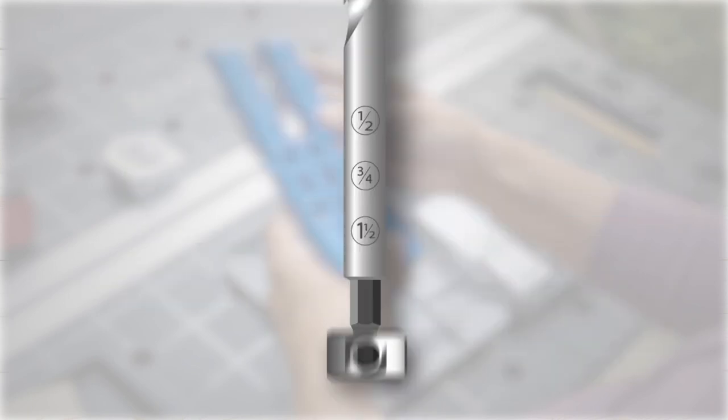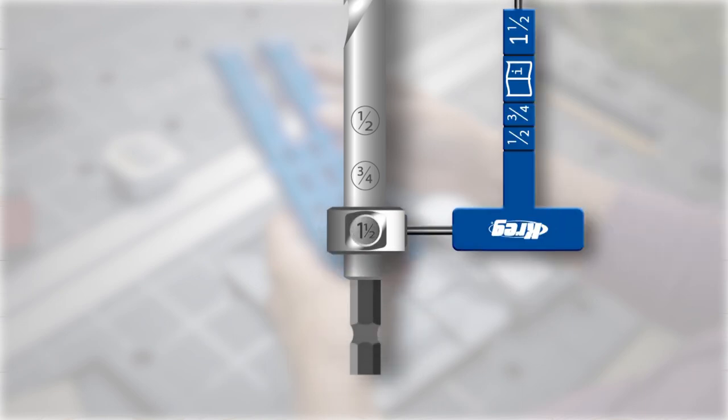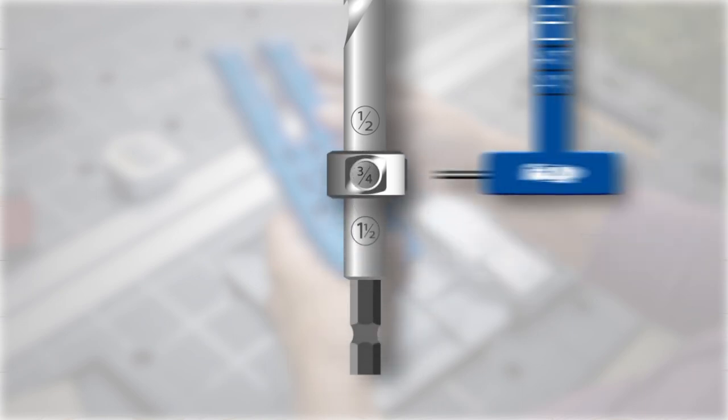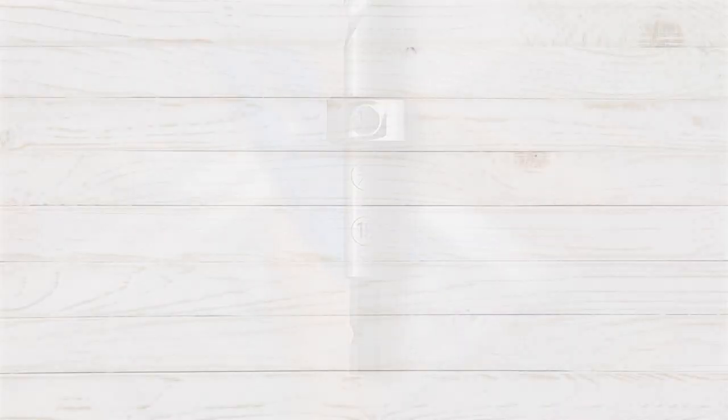The stop collar has a window. Simply slide the stop collar until the thickness range you need shows through the window, then lock the collar down with the set screw.